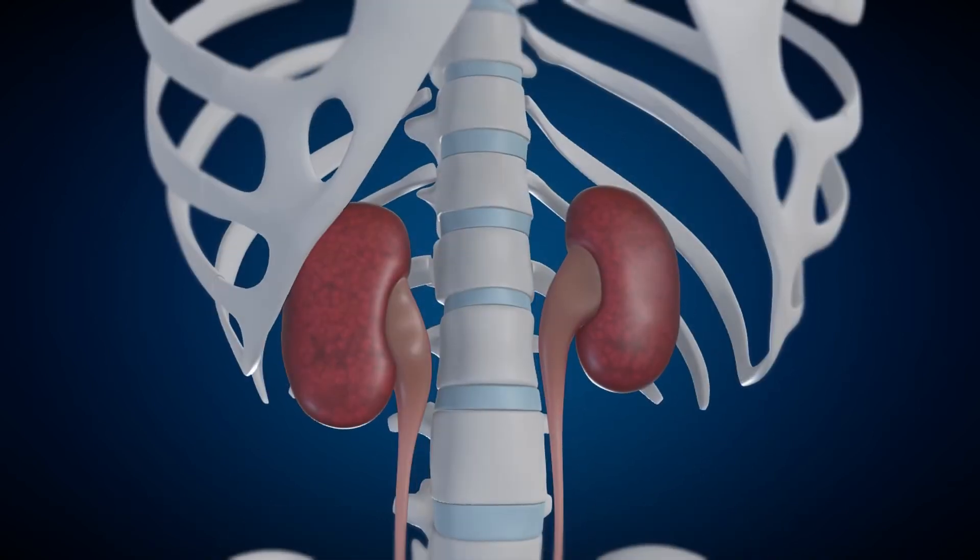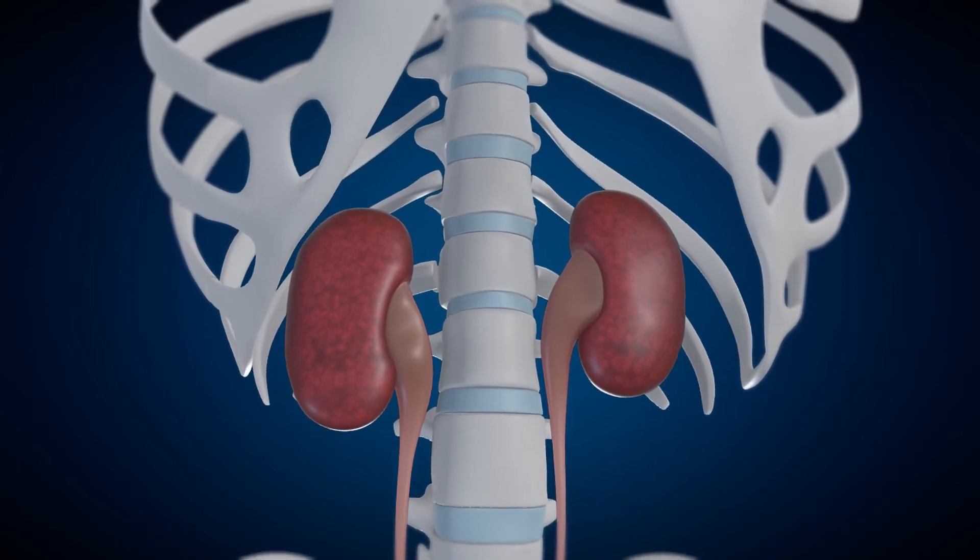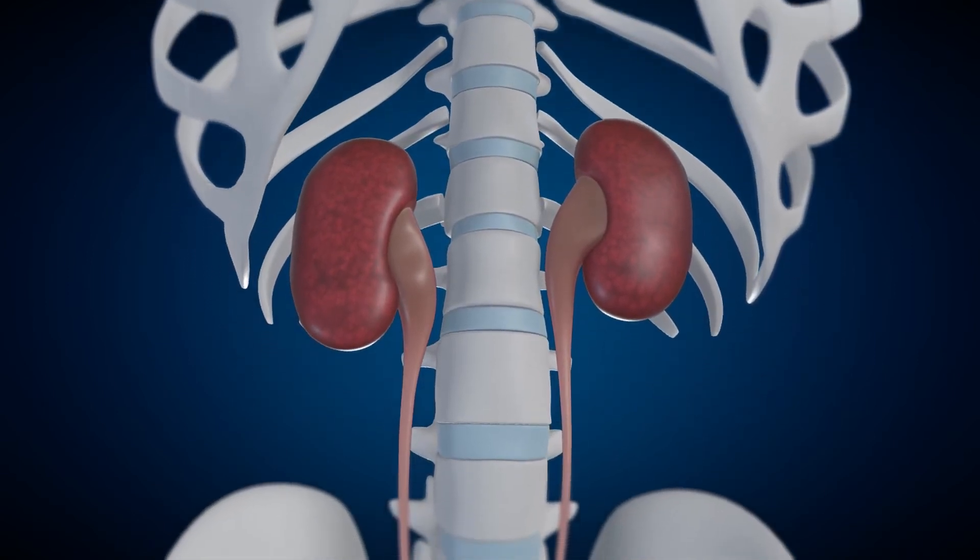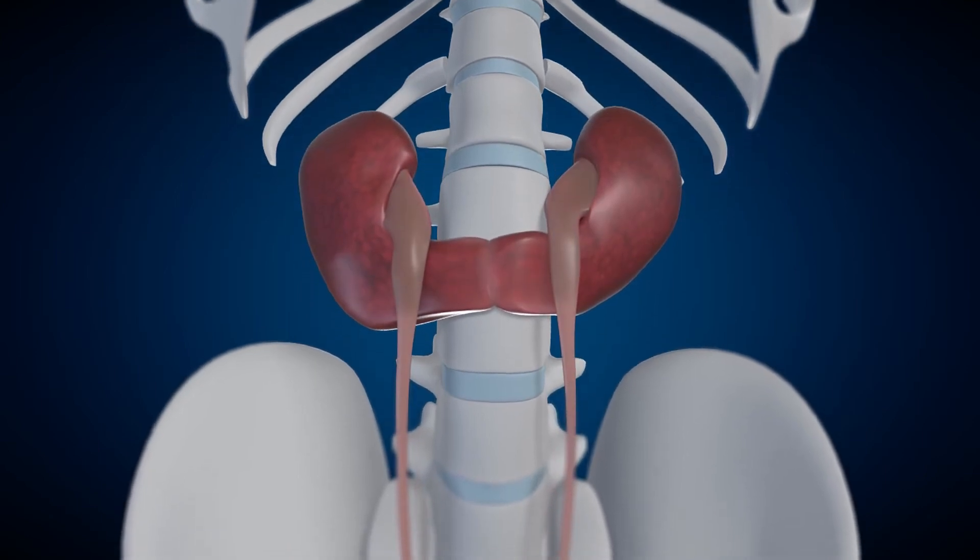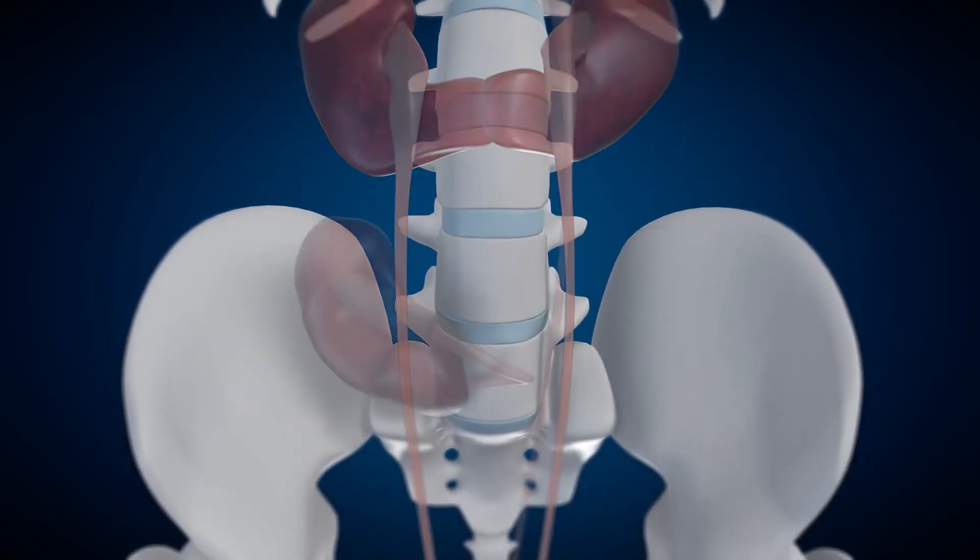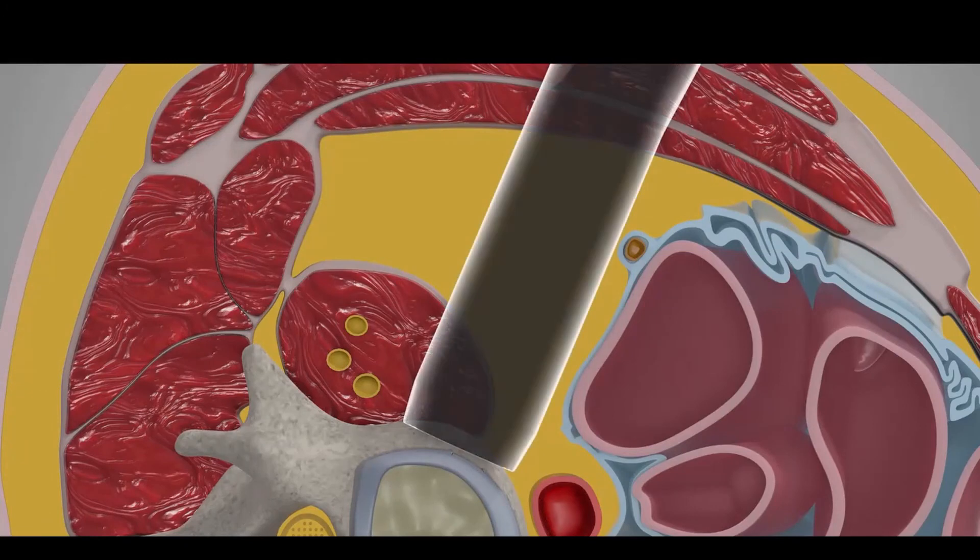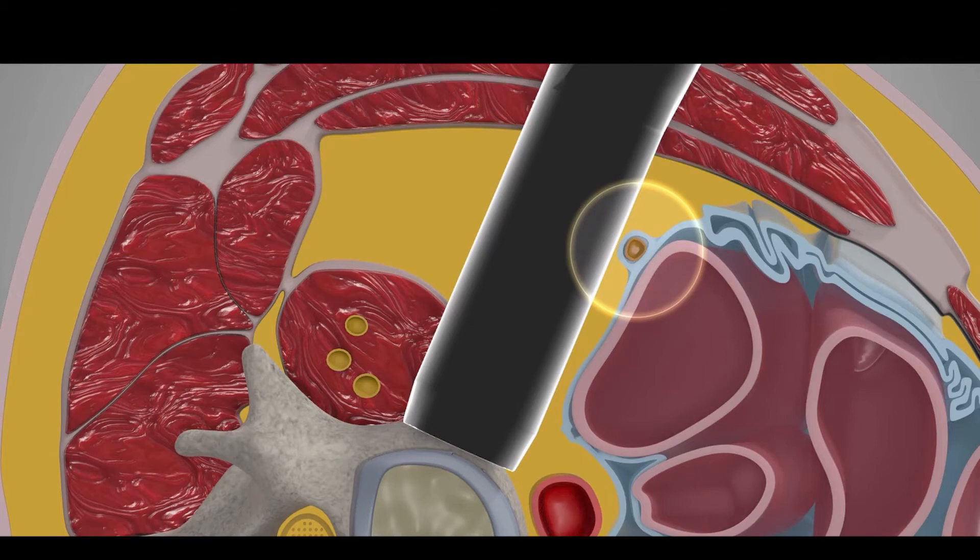As part of preoperative planning, surgeons should evaluate for abnormalities of the kidneys, including a history of a kidney transplant, a horseshoe kidney, or a pelvic kidney. The ureter is usually attached to the peritoneum and will move anteriorly with the peritoneal contents as they are swept forward. Retractors may be used to directly visualize and protect the ureter.